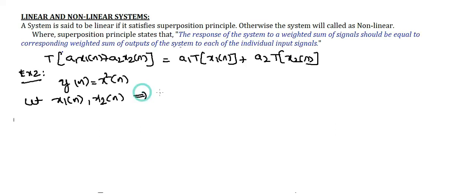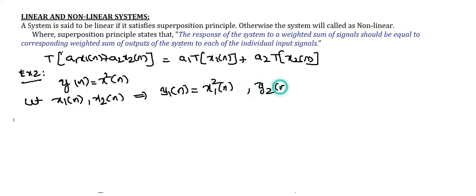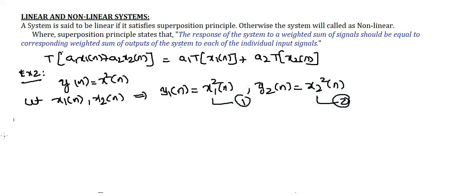Similar to the previous example, I take individual samples x1(n) and x2(n) with individual responses: y1(n) = x1²(n) and y2(n) = x2²(n). I assign these equation numbers 1 and 2.